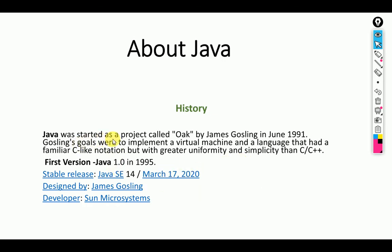Java was started as a project called Oak by James Gosling in 1991. Java has a virtual machine — that's why Java is very powerful and very secure, because the Java compiled code can run on any kind of platform. The first version was released in 1995 and the current stable version is Java SE 14, developed by James Gosling and the developer team at Sun Microsystems.